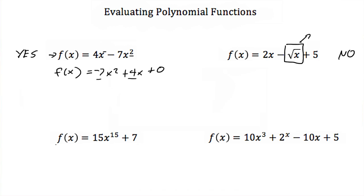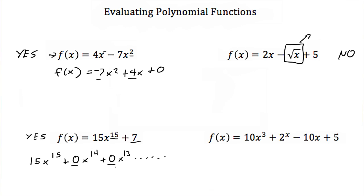Our third example: f(x) = 15x¹⁵ + 7 is a polynomial function. We could rewrite this as 15x¹⁵ + 0x¹⁴ + 0x¹³ and so on. Even though all the coefficients between x¹⁵ and our constant of 7 are 0, zero is still a real number, and our exponent of 15 is a whole number. So yes, this is a polynomial function.